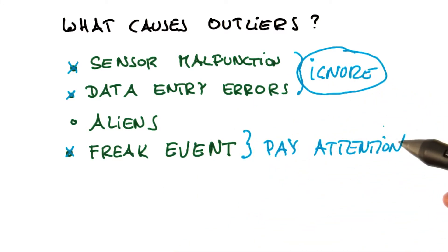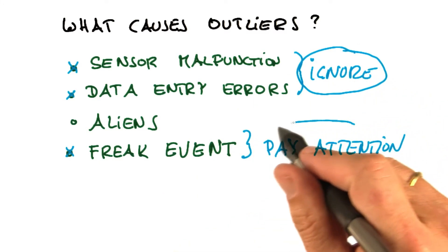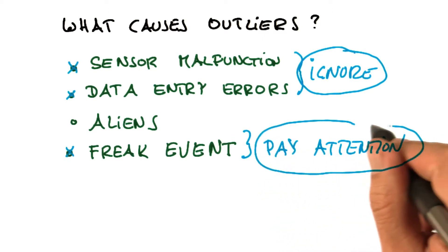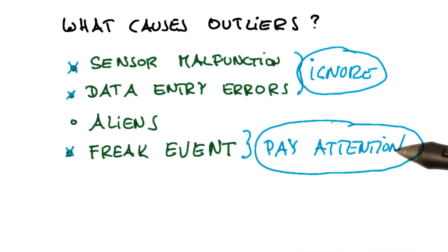But there are fields where people pay attention to the outliers. A common one would be fraud detection, which is a special kind of anomaly detection, where people really care about whether there's something in the data that makes the data point look so different they should pay special attention to it.